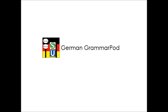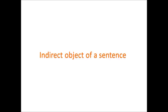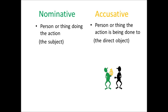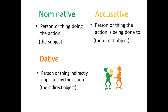Hello and welcome to German GrammarPod. Today we've reached the dative case. One of the key things the dative case does is show the indirect object in a sentence. So far we've had the nominative which showed the person or thing doing the action, and the accusative that showed the person or thing the action was being done to. What the dative shows is the person — and it usually is a person, or at the very least an animal — that is indirectly impacted by the action.